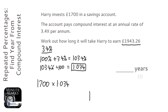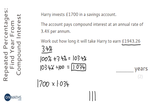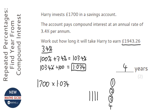That's year one. If you then press equals again you'll get the answer for the second year, which is 1817.56. Press equals again and you get 1879.36 — that's year three. Press equals again and you get 1943.26, which is the answer in the question. So it's taken us four years.